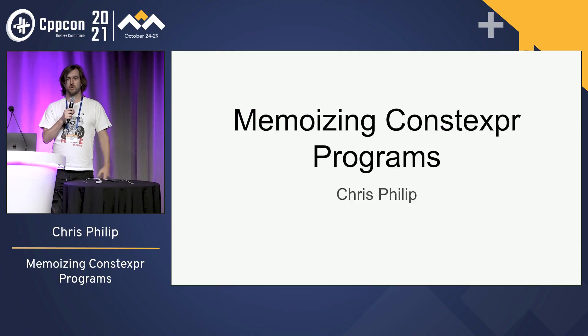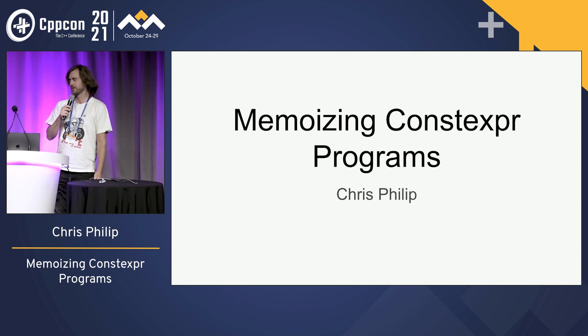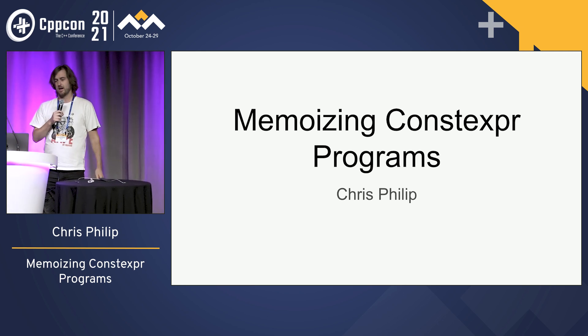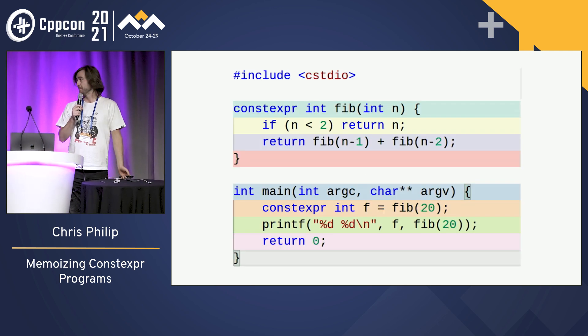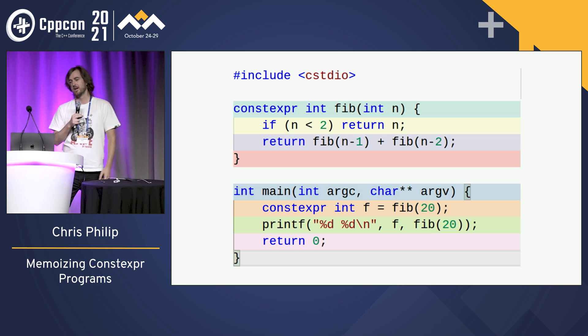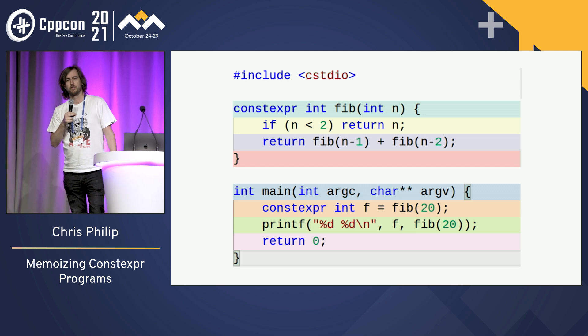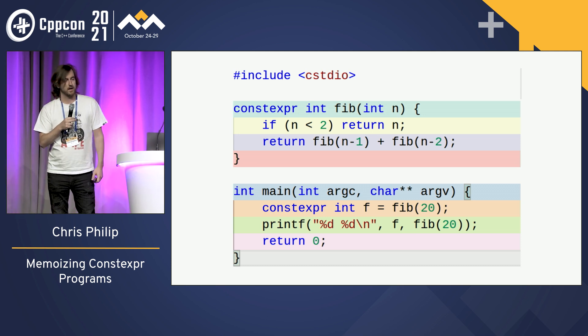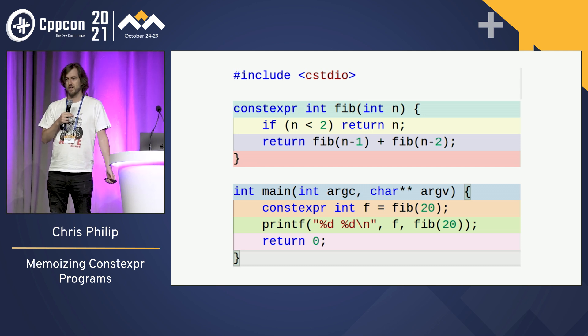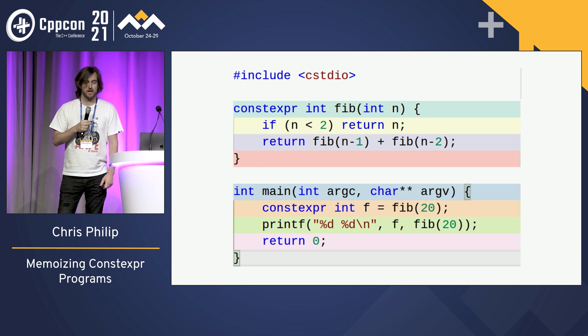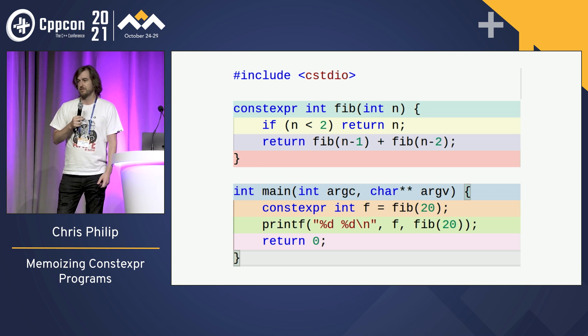Hi, my name is Chris. I work at Google and I'm going to be talking about memoizing constexpr programs today. Since modern C++14, you can just add this nice constexpr qualifier to your Fibonacci function, and then you can call this function at compile time or at runtime and it will give you a value either way.